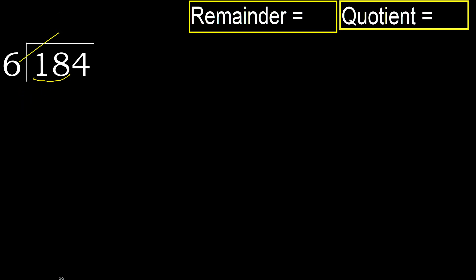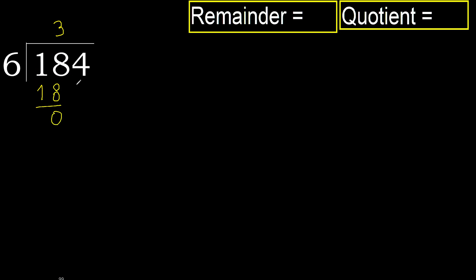Multiply by which number is nearest to 18 but not greater? 6 multiply by 4: 24 is greater. 6 multiply by 3: 18 is not greater, ok. Subtract: 18 minus 18 equals 0.